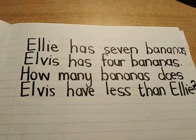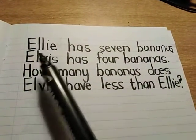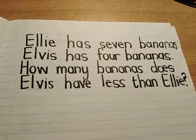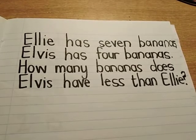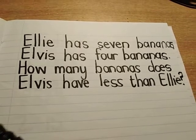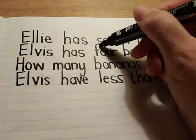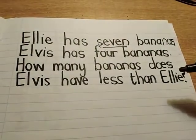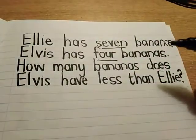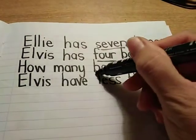I've got another problem that I need your help with. Ellie has seven bananas and Alvis has four bananas. How many bananas does Alvis have less than Ellie? So let's quickly go see — how many bananas does Ellie have? She has seven. And how many bananas does Alvis have? Four. Now we need to go see what the difference is.